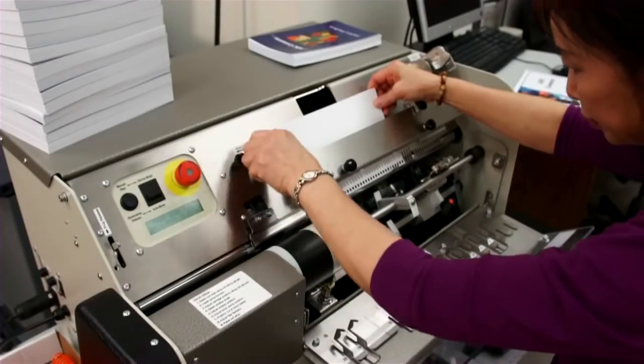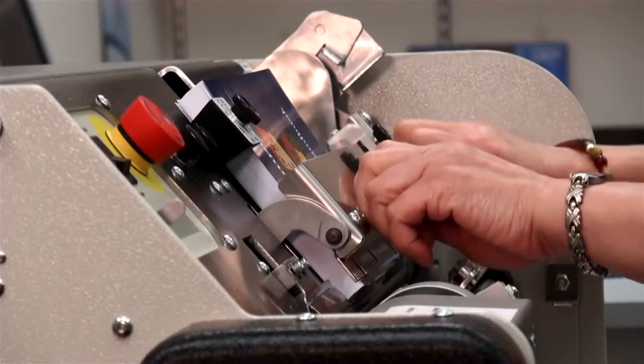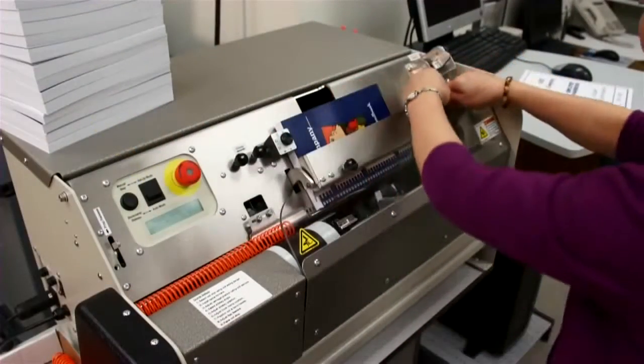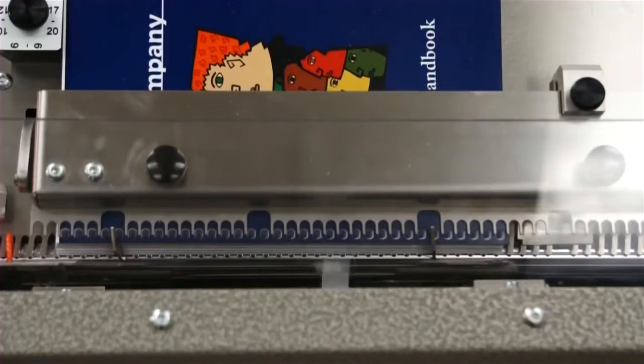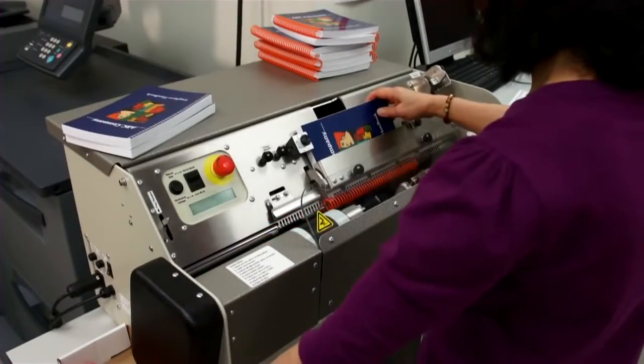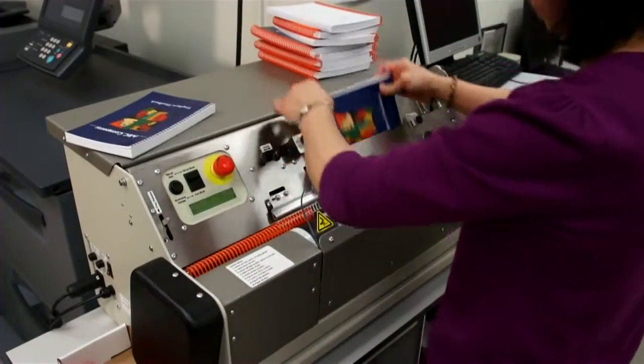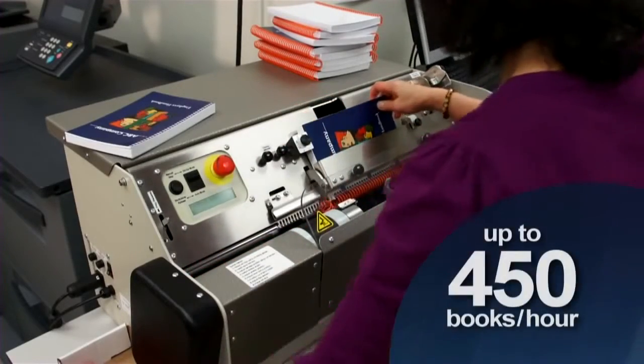The machine's side lay and book clamp work together to make sure each book is perfectly positioned to receive coil. The operator then simply drops a piece of pre-formed, pre-cut coil into position and with a step on the foot pedal, the coil is inserted into the book and both coil ends simultaneously cut and crimped. That's it. Production speeds on the Coilmatic are rated as high as 450 books per hour.